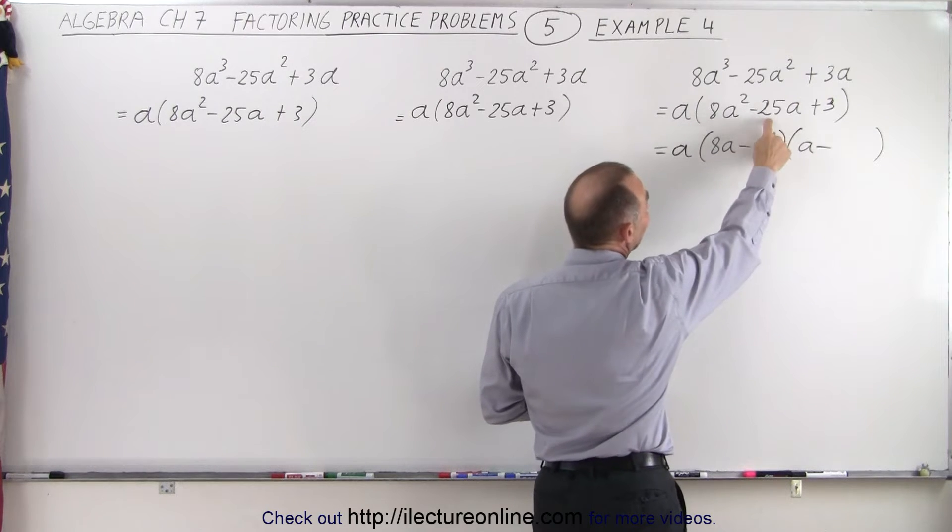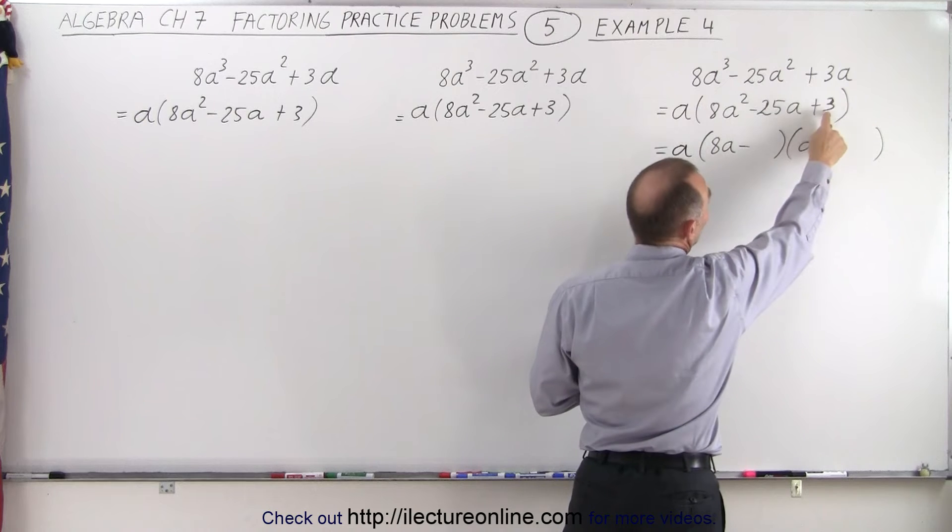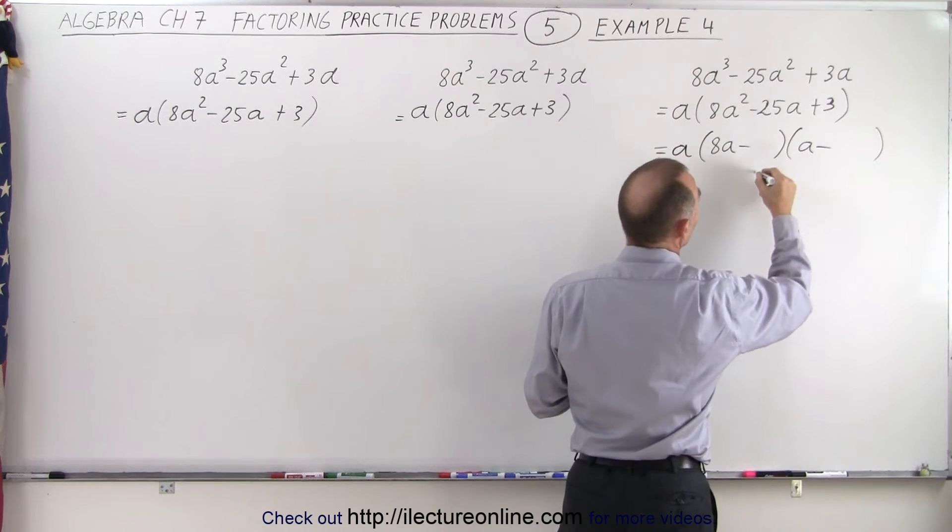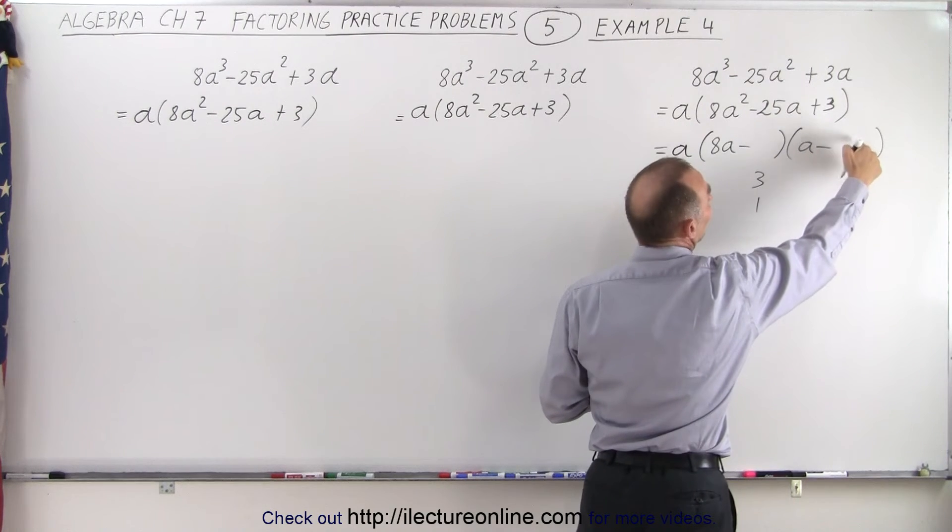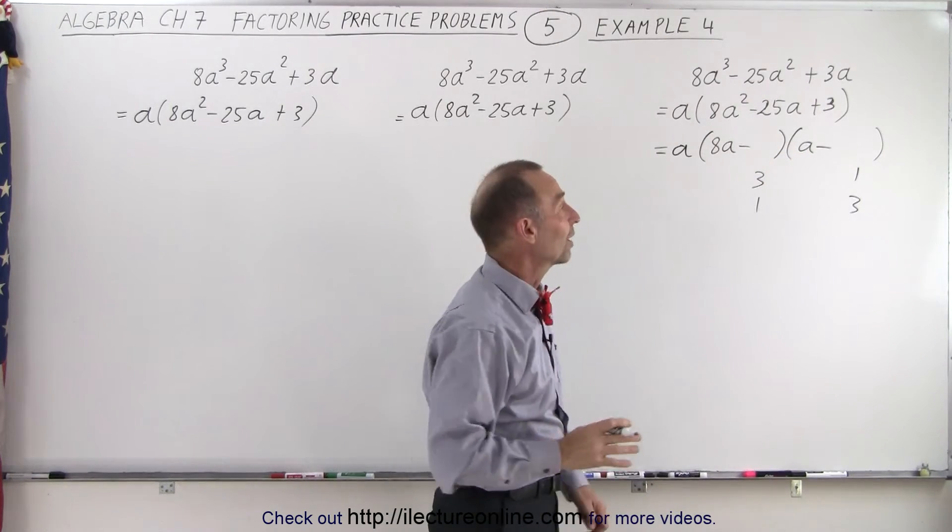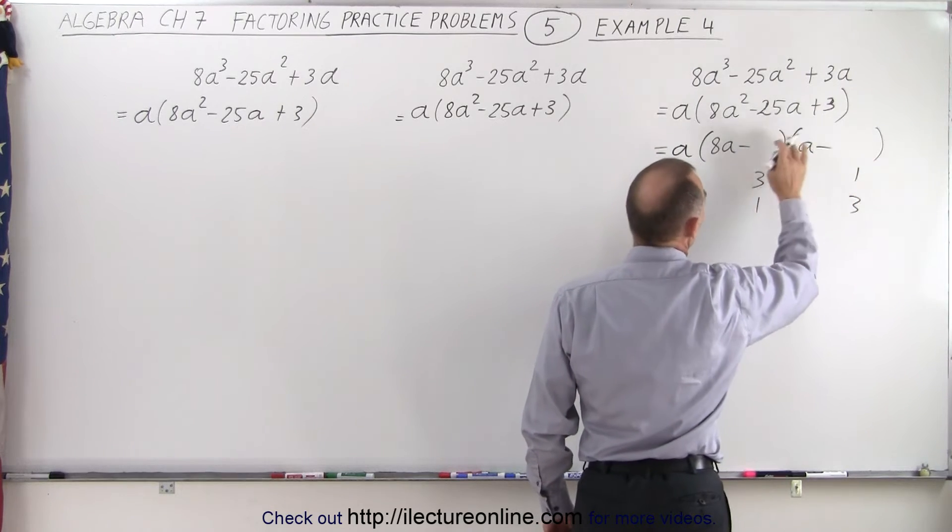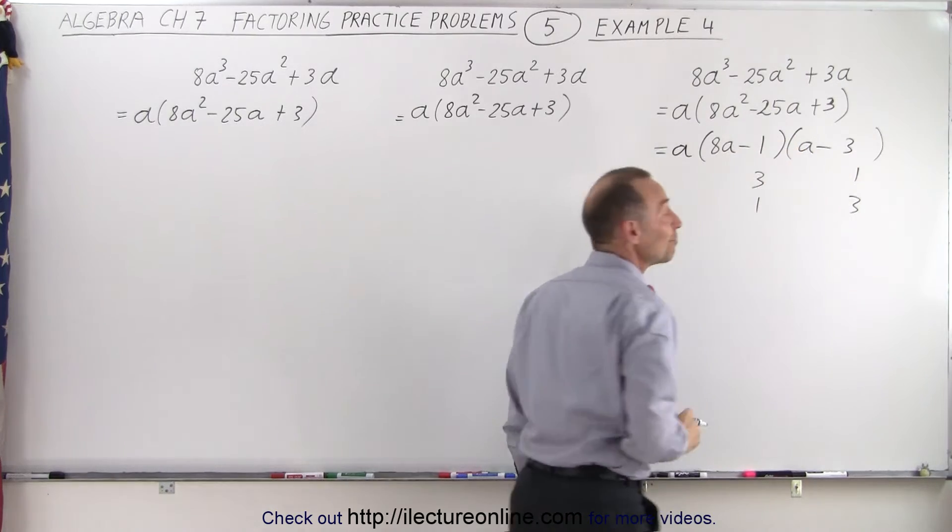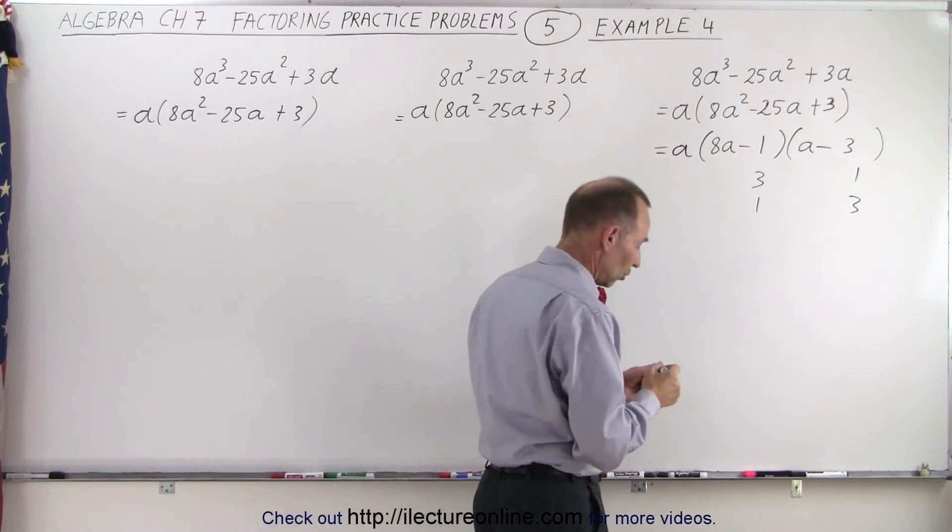And now again, to get minus 25, you want the biggest number possible. Because notice we have a 3 there. The only way to get a 3 is to multiply 3 times 1, or 1 and 3. But I would put the 3 over there because 3 times 8 gives us 24. That gets us really close to 25. So even though we could technically put a 3 there and a 1 there, I would say a 3 there and a 1 there is my best guess to get the right combination.